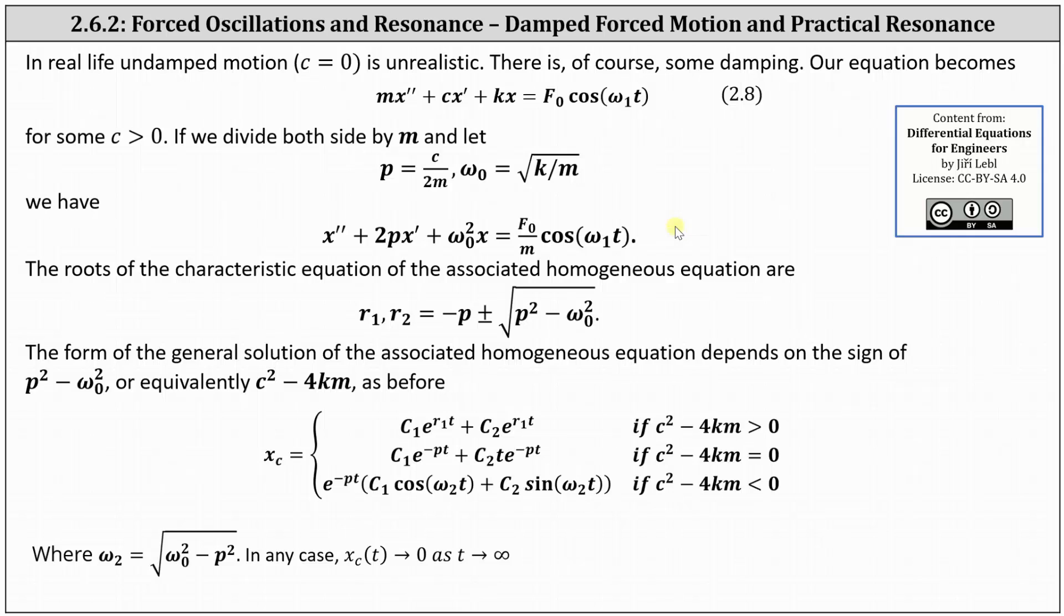The roots of the characteristic equation of the associated homogeneous equation are equal to negative P plus or minus the square root of the quantity P squared minus the square of omega sub zero.